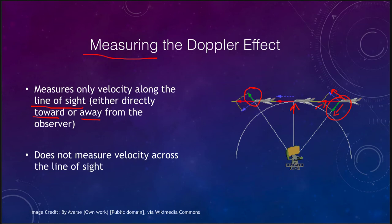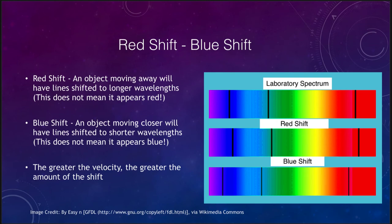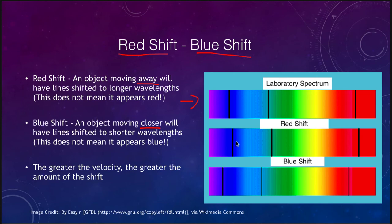Now let's look at the shifts we get. We can get two types of shifts: a red shift or a blue shift. A red shift means the object is moving away, and a blue shift means the object is moving towards you. Looking at the example, the laboratory spectrum shows where the lines would be if nothing was moving relative to each other. A red shift moves everything towards the red portion of the spectrum, while a blue shift moves the lines towards the blue part of the spectrum.